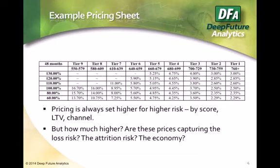When you look at this, it's sensible — few players in the market do completely senseless things because you don't stay in business very long that way. But quantitatively, is this right? Have we really priced appropriately for increased risk, or going the other direction, for the lowest risk? Are these prices really capturing the increase in loss risk, attrition risk, or the economy? That's what we want to dig into — how do we know that?